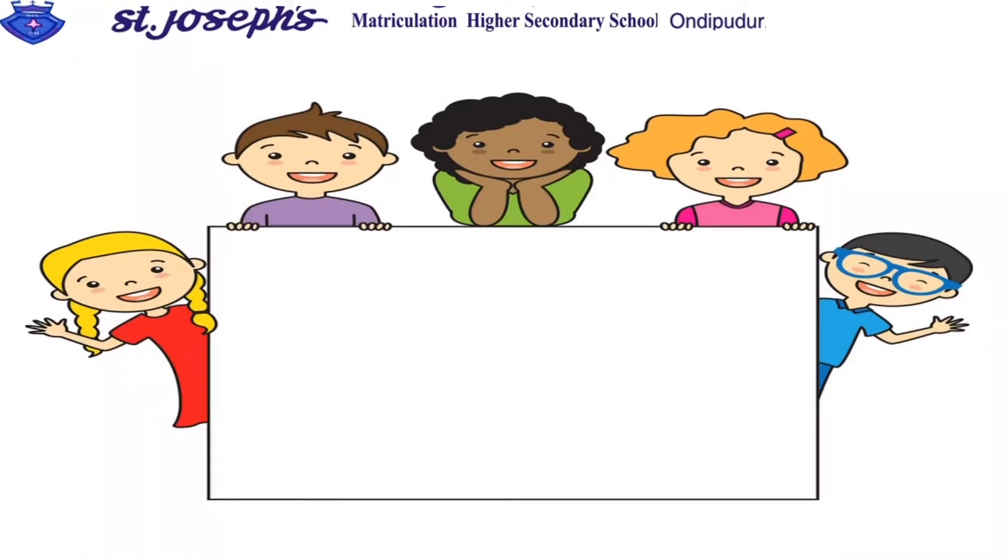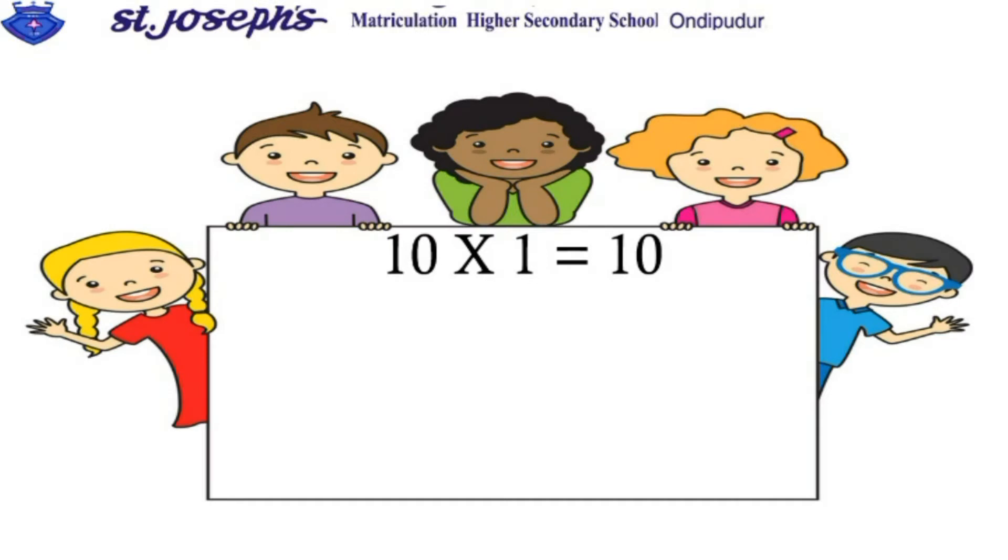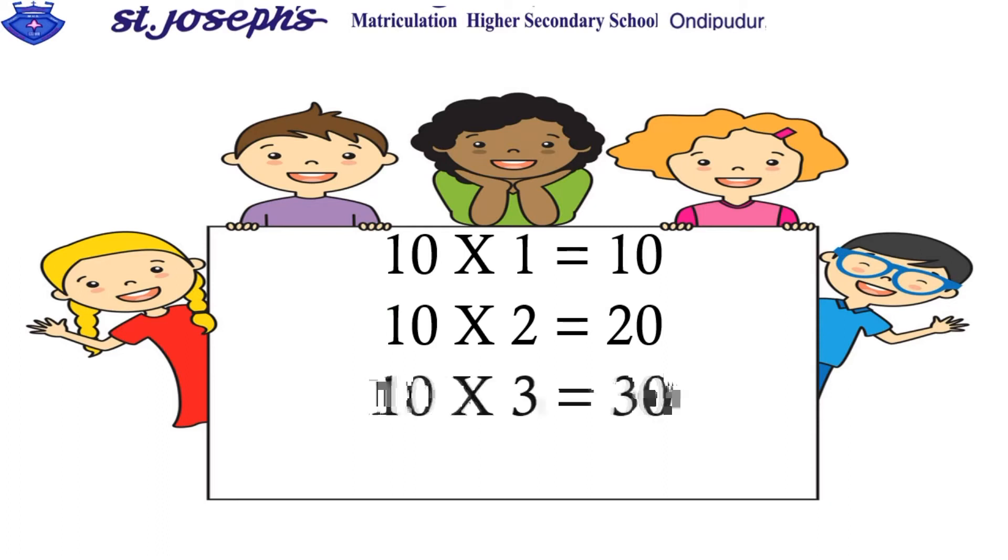Ten ones are ten, ten ones are ten. Ten twos are twenty. Ten threes are thirty, ten threes are thirty.